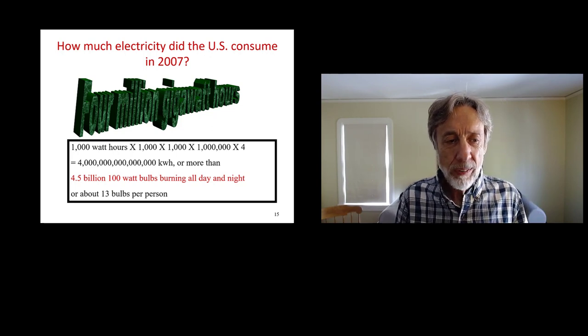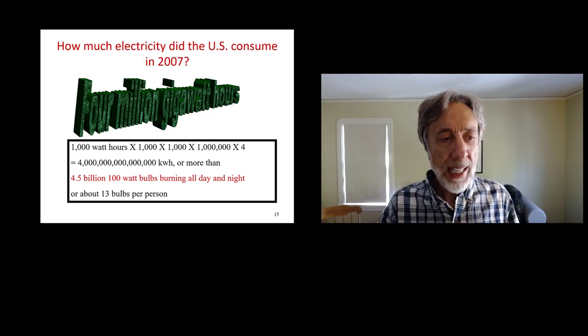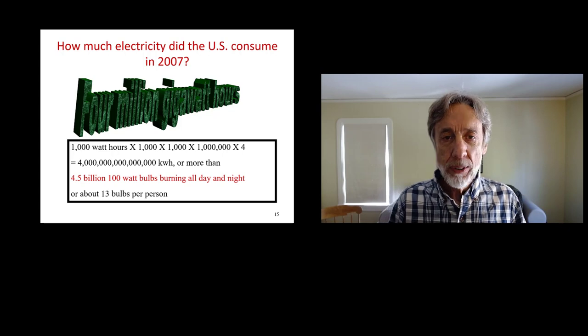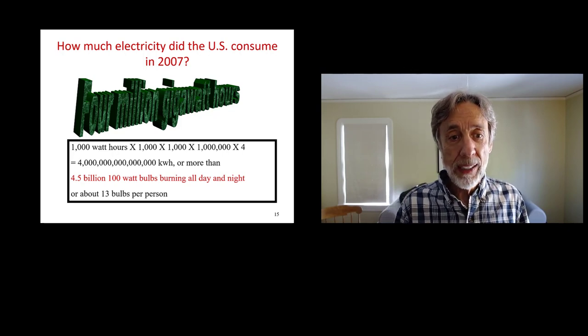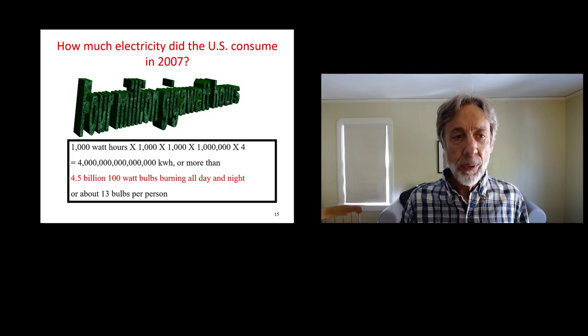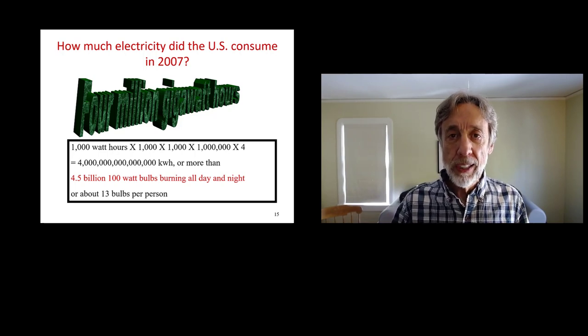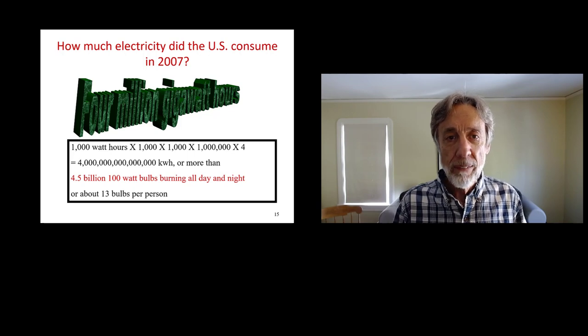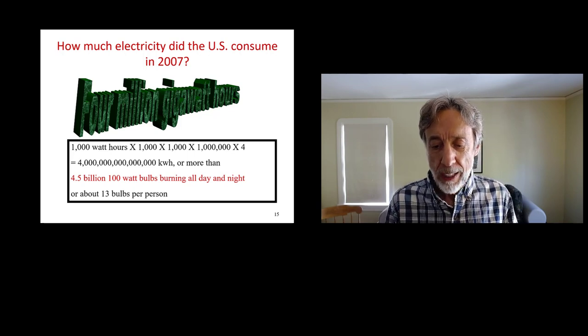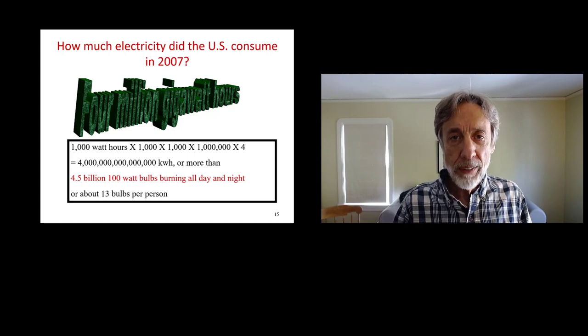How do we grasp that? I tried to think of it in terms of light bulbs or TVs. If you had four and a half billion light bulbs, bright 100-watt incandescent bulbs, and you burn them all day and all night for the whole year, then you'd be using the run of electricity that was used in the United States in 2007. Or if you want to break it down per person, about 13 bulbs per individual burning for that period of time.